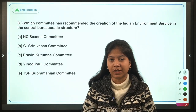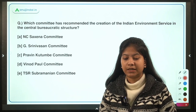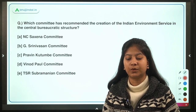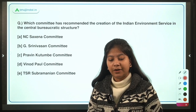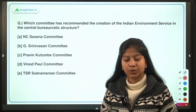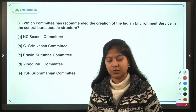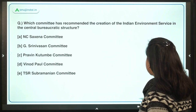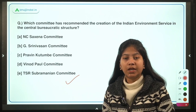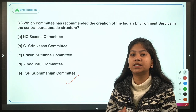The first question is: which committee has recommended the creation of the Indian Environment Service in the central bureaucratic structure? The five options are NC Saksena Committee, Jishirini Vasan Committee, Praveen Kutumb Committee, Vinod Pol Committee, and TCR Subramanian Committee. The correct answer is option E — the TCR Subramanian Committee.